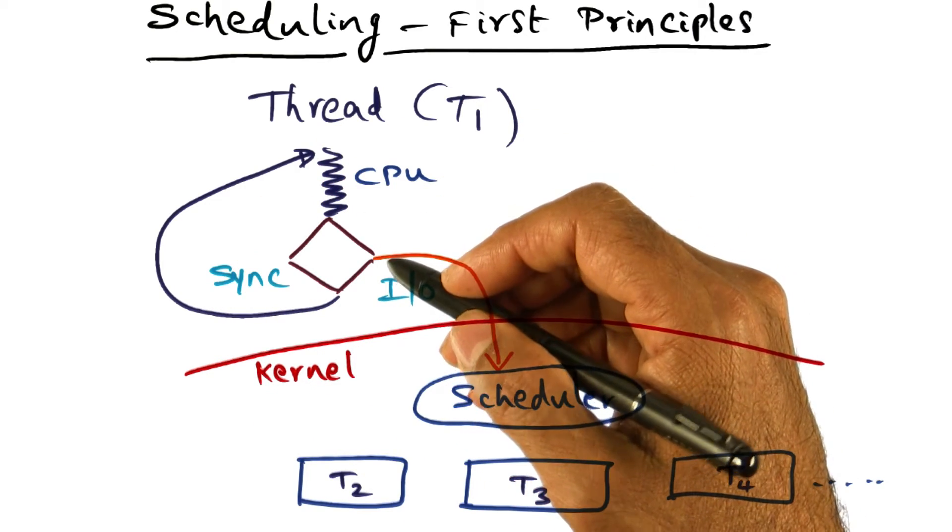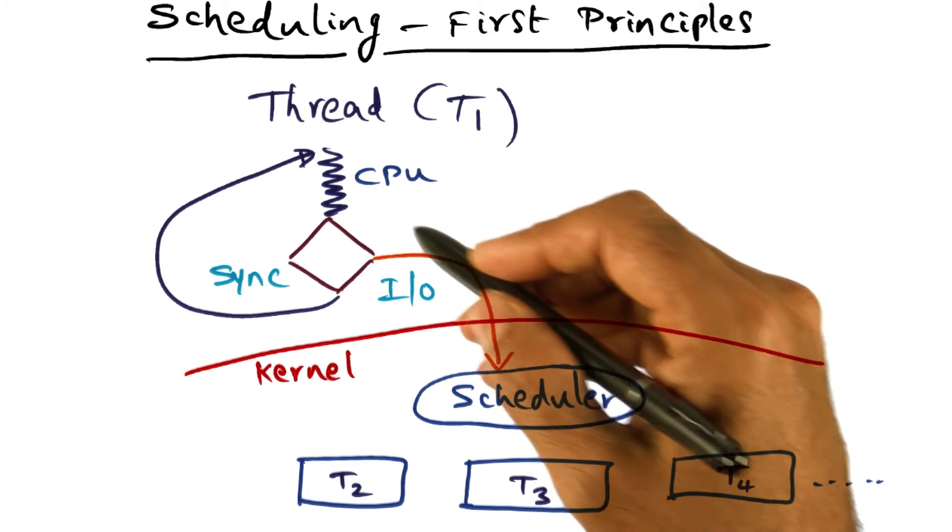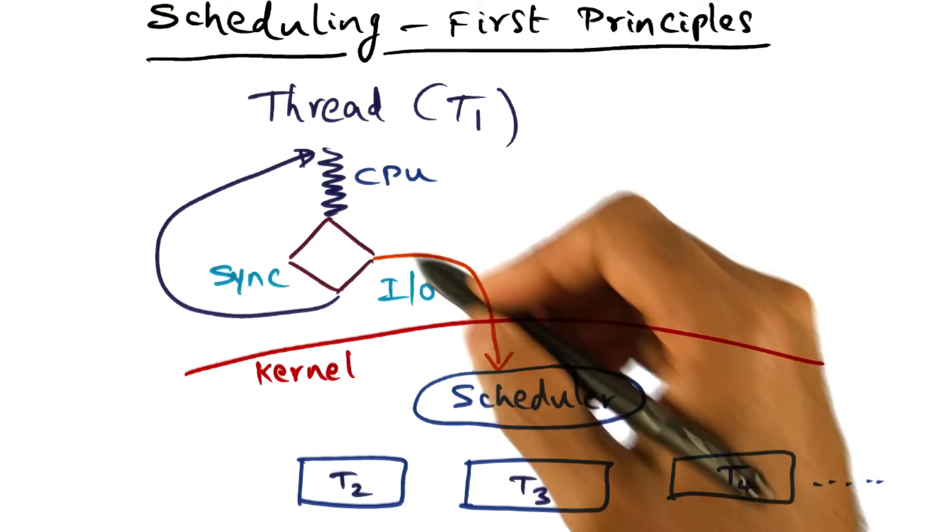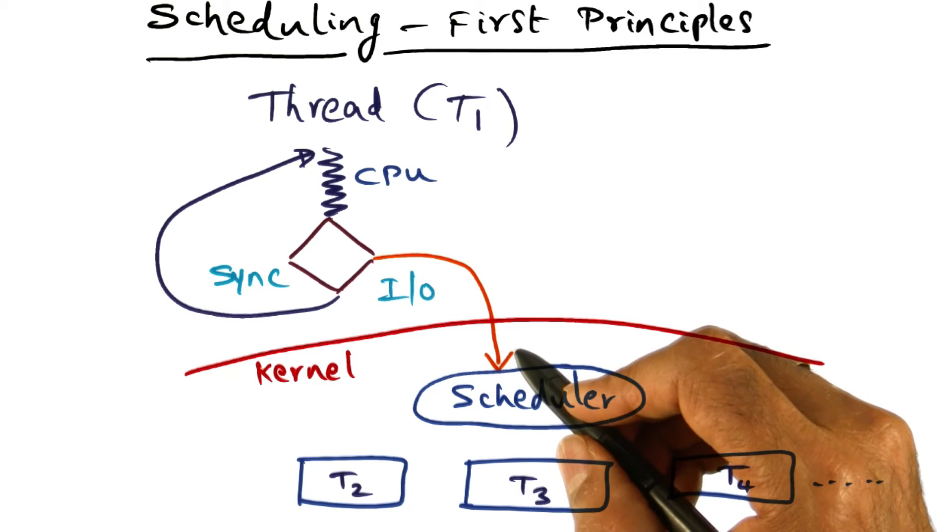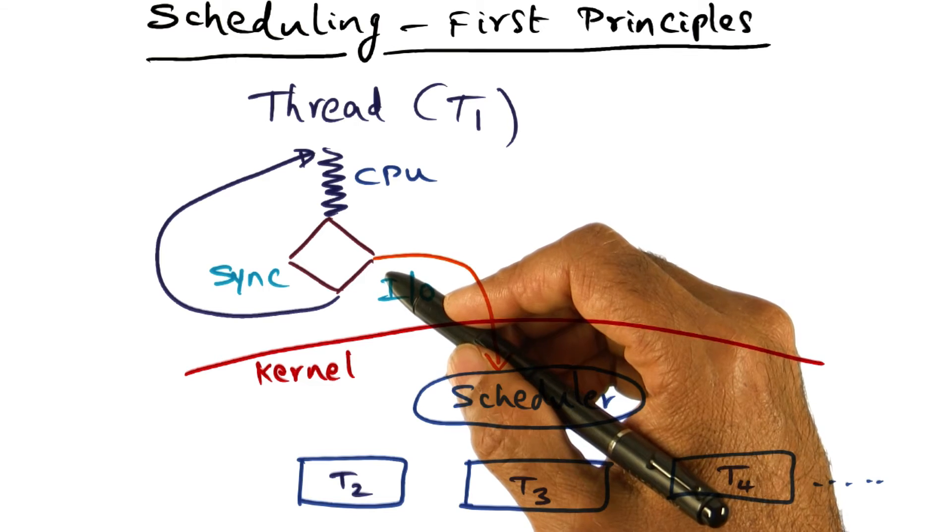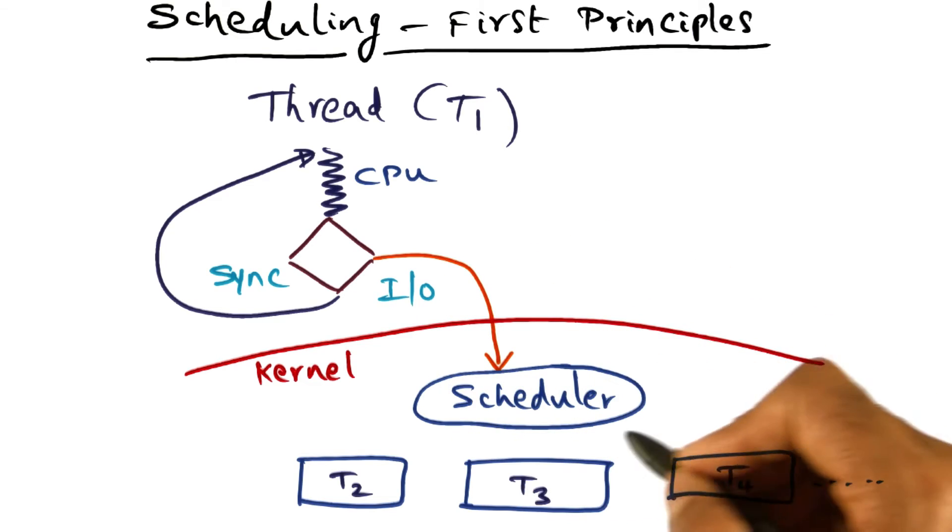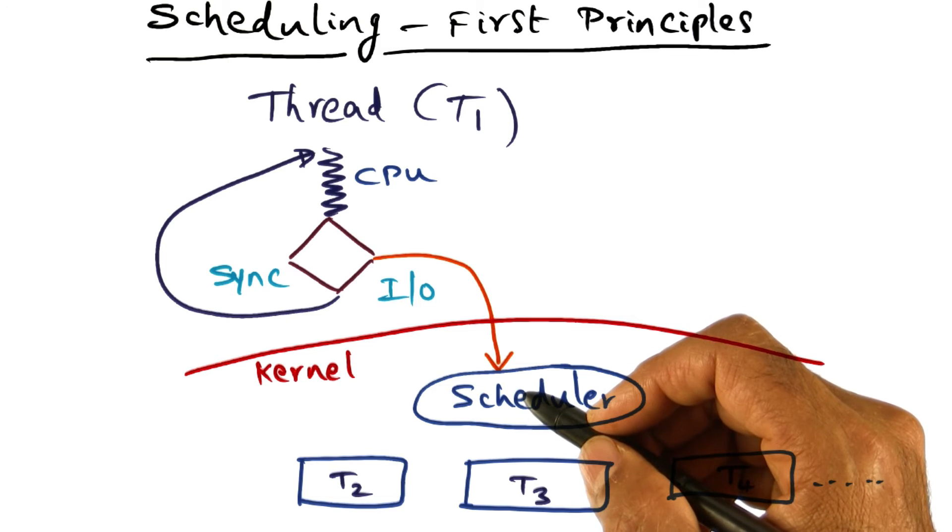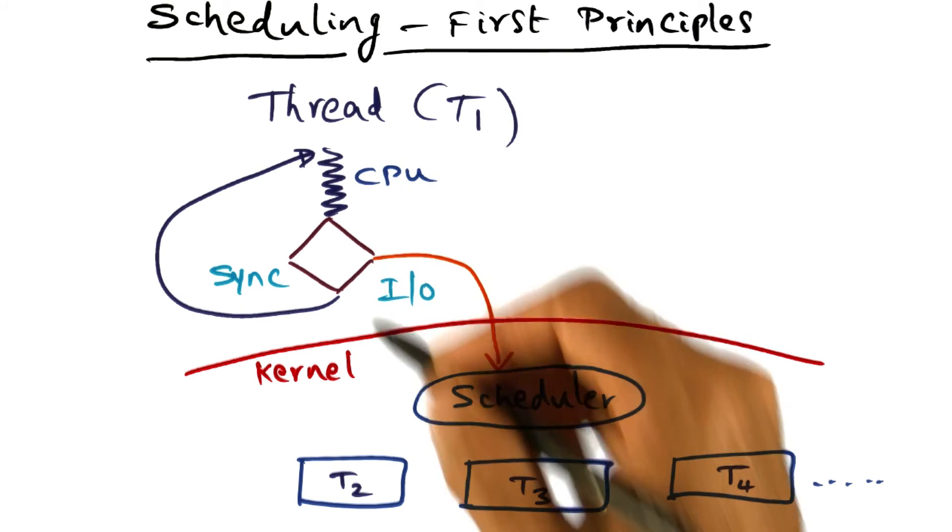Or it might be that it is a compute bound thread, in which case it might just run out of the time quantum that it has been given by the scheduler on the processor. But fundamentally, what that means is, this is a point at which the operating system, in particular, the scheduler piece of the operating system, can schedule some other thread or a process to run on the CPU.